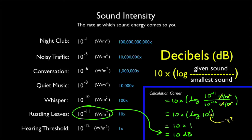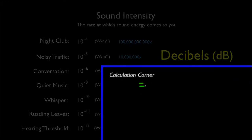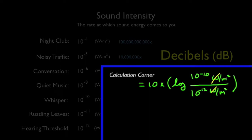Let's do another example. How about a whisper? 10 to the minus 10 divided by 10 to the minus 12 is 10 to the 2. What's the log of 10 to the 2? The answer is 2. 10 times that, and you have 20 decibels.